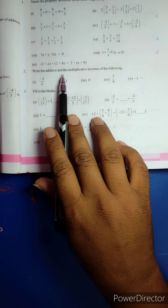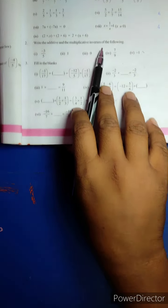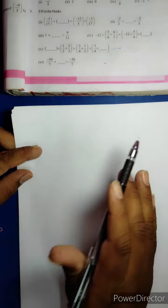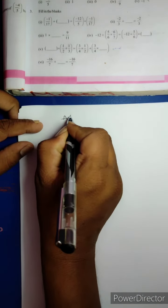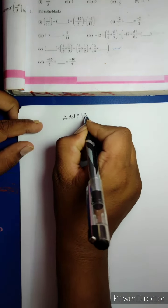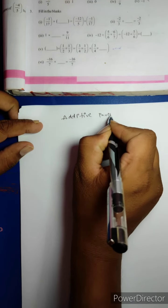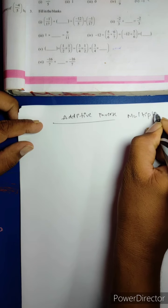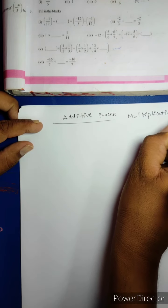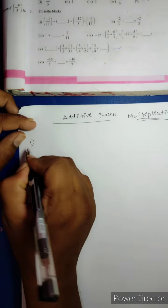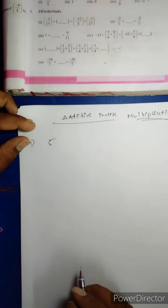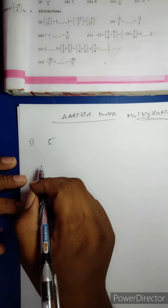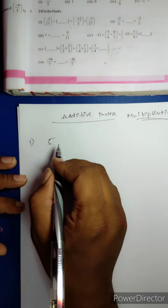Second section: Write the Additive and Multiplicative Inverse. First number: +5 — there is no minus symbol, so it means +5. The Additive inverse: just change the symbol, so it is −5.